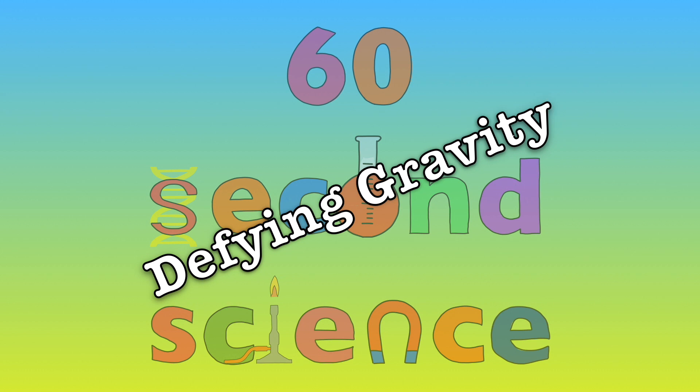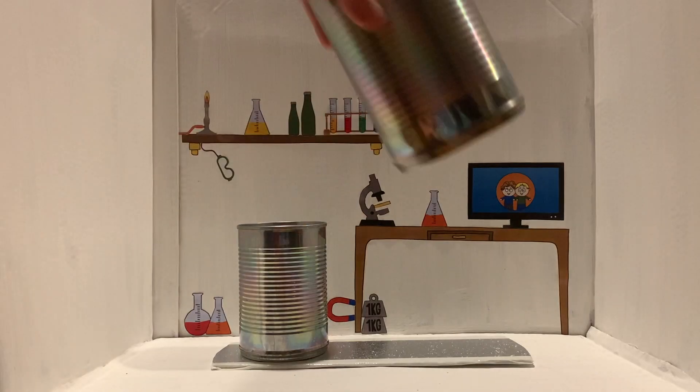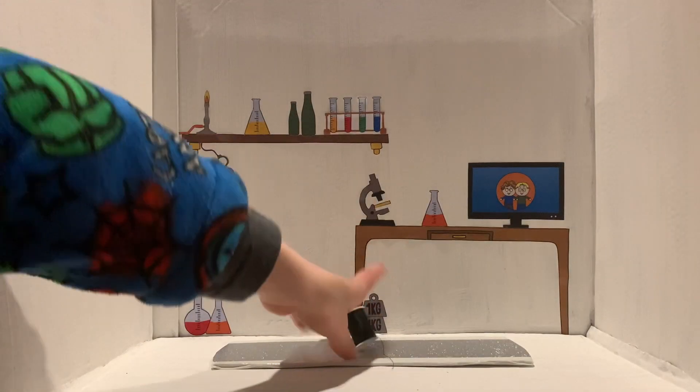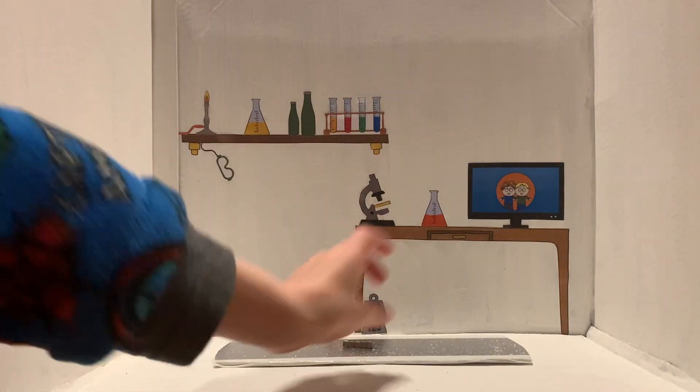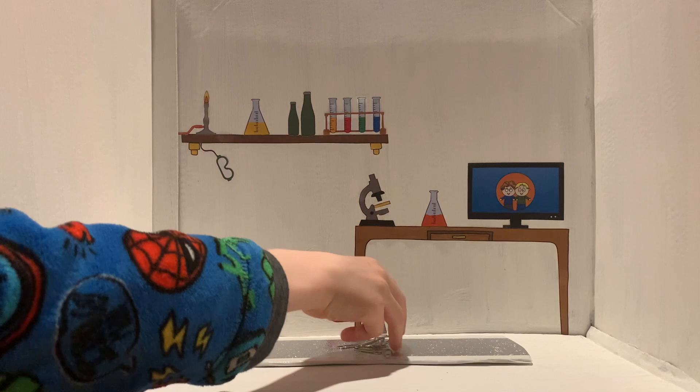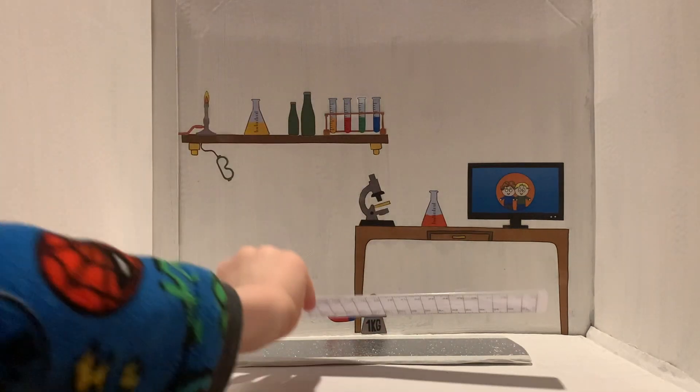Defying gravity. You will need two tin cans, some cotton and some sellotape. You will also need some magnets, a paper clip and a ruler.